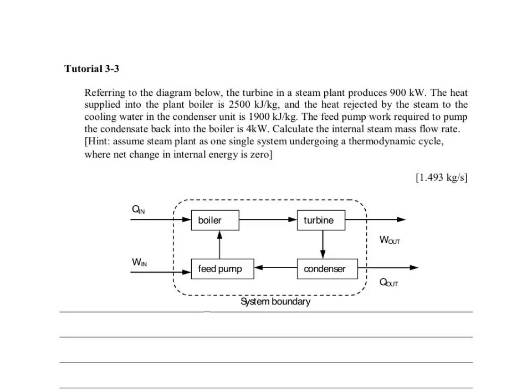The second sentence says the heat supplied to the plant is 2500 kilojoules per kilogram. Per kilogram of what? Per kilogram of steam. And the heat rejected by the steam to the cooling water - remember this is the heat rejected to the cooling water which takes away the heat - is 1900 kJ/kg.